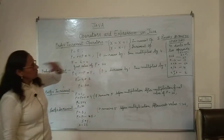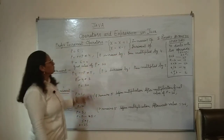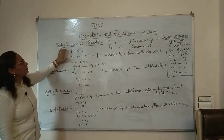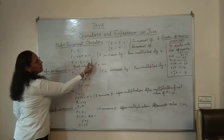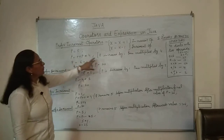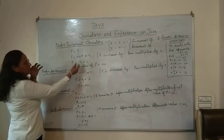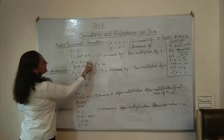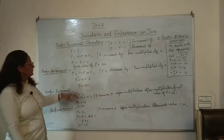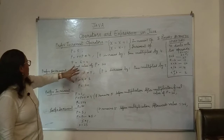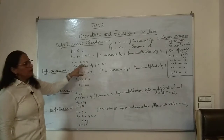Both operators can be prefix or postfix. For the prefix increment operator: P is equal to 5, then P = ++P * 4. Here P is increased by 1 first, making P equal to 6, and then multiplied by 4. The final value of P is 24. The value is increased before it gets multiplied.